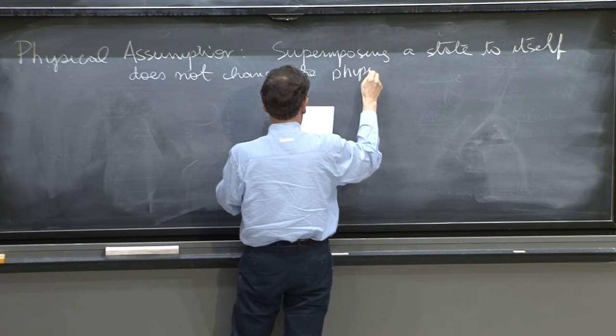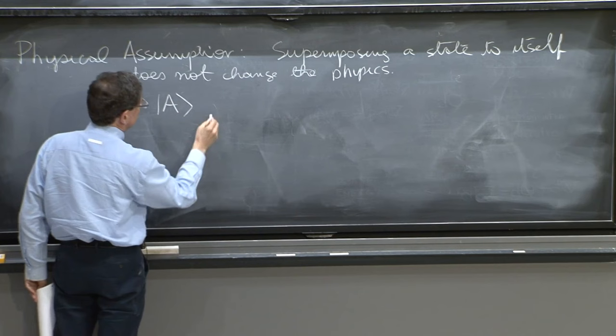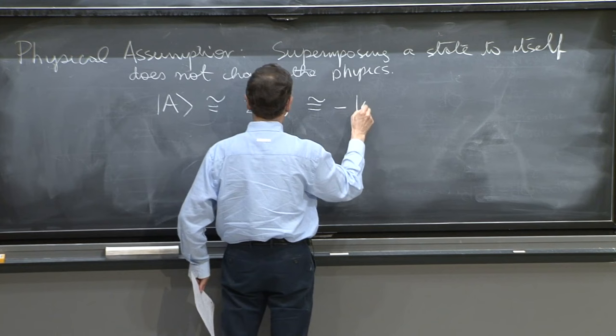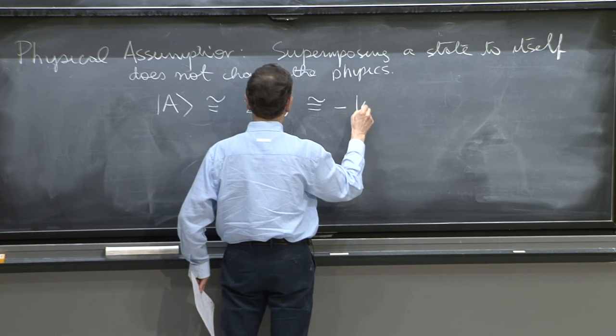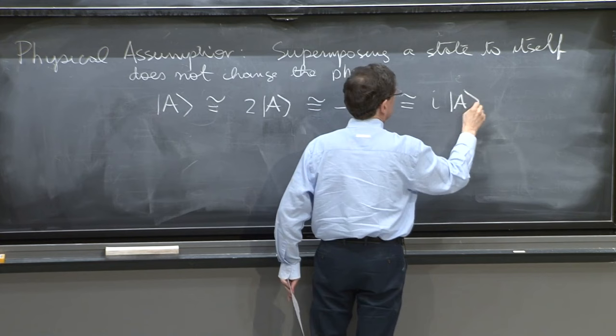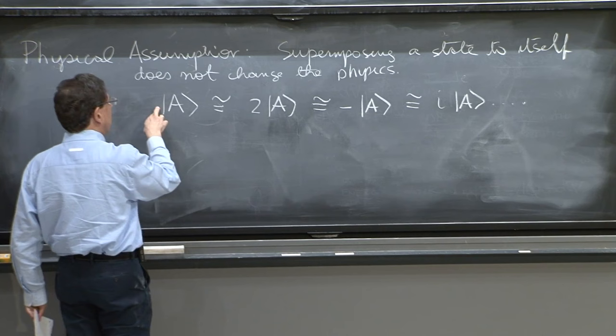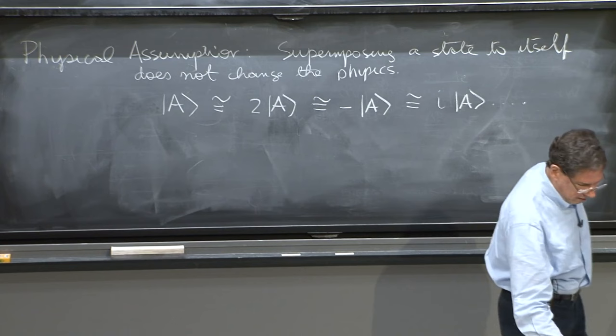So if I have a state |a⟩, this is physically equivalent—I'll write physically equivalent with this symbol—to the state a plus a, which would be 2 times a. It's physically equivalent to the state minus a, to i|a⟩, anything. It's not equivalent to 0|a⟩, because that would be the 0 state. As long as you have a non-zero coefficient, all these states are supposed to be physically equivalent.